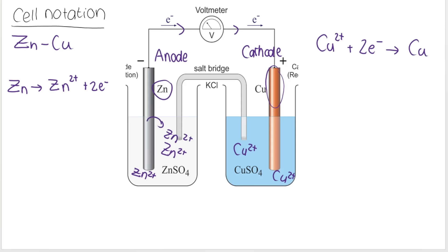The cell notation is basically a way of summarizing what is going on in our galvanic cell. It is always represented by a double line in the middle, and that double line represents the salt bridge, which always separates the anode half cell and the cathode half cell.